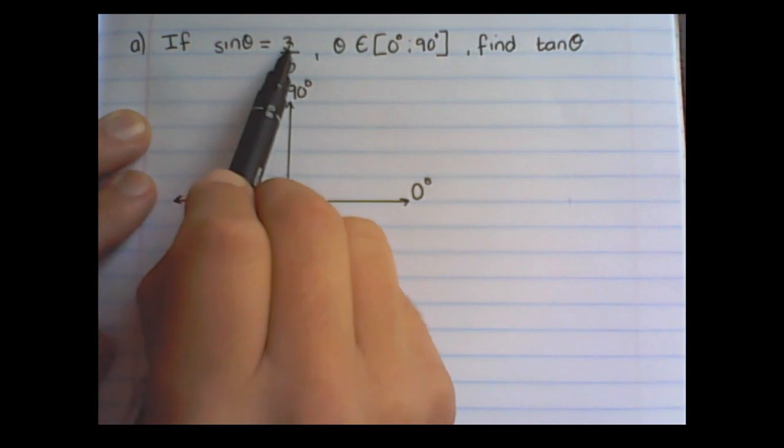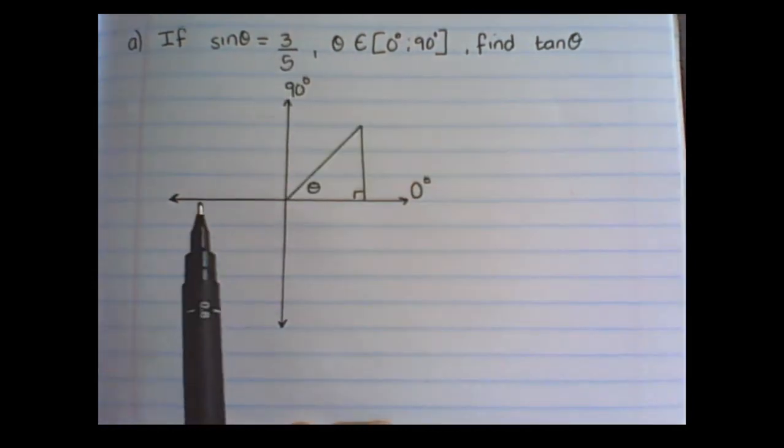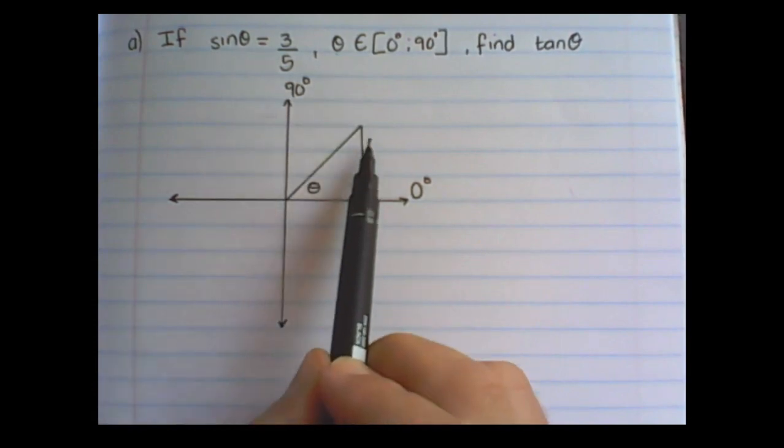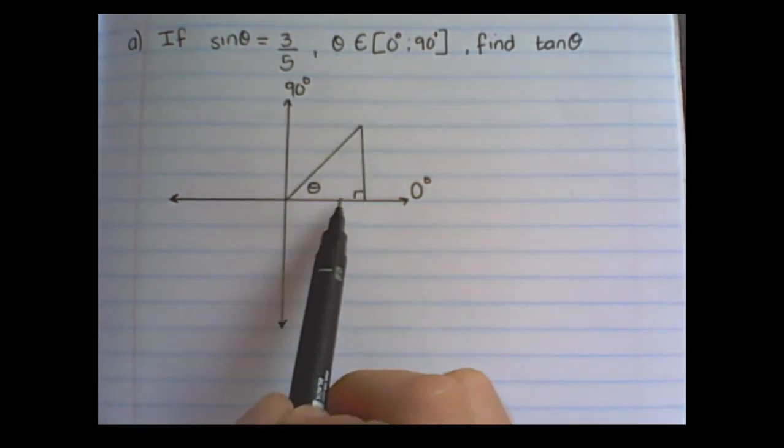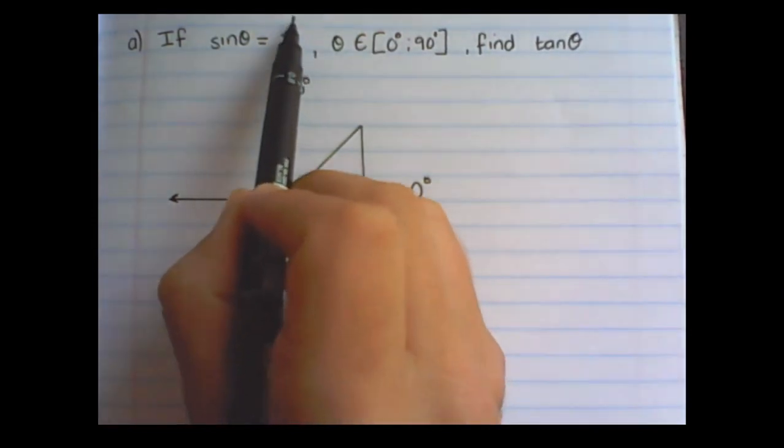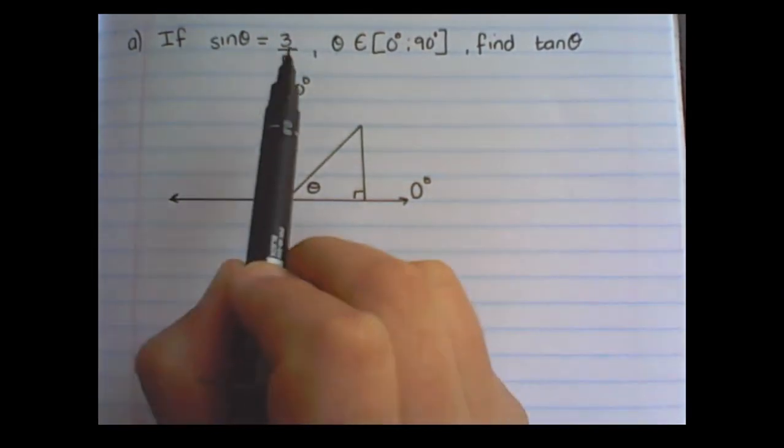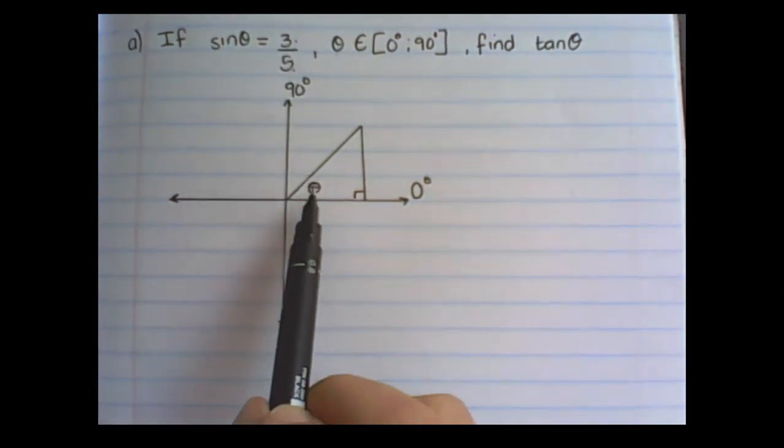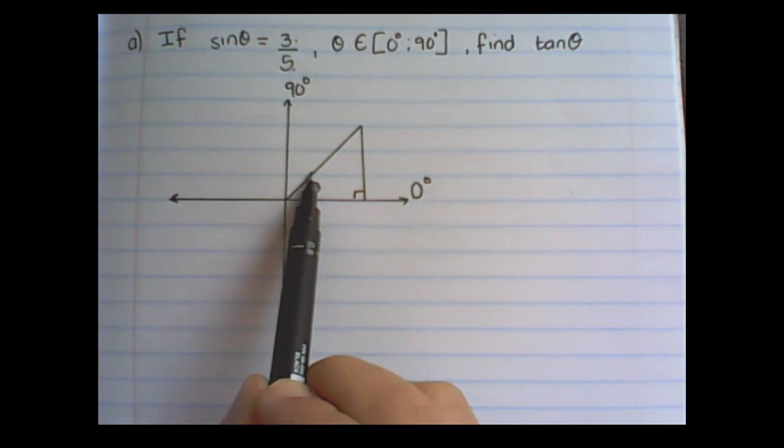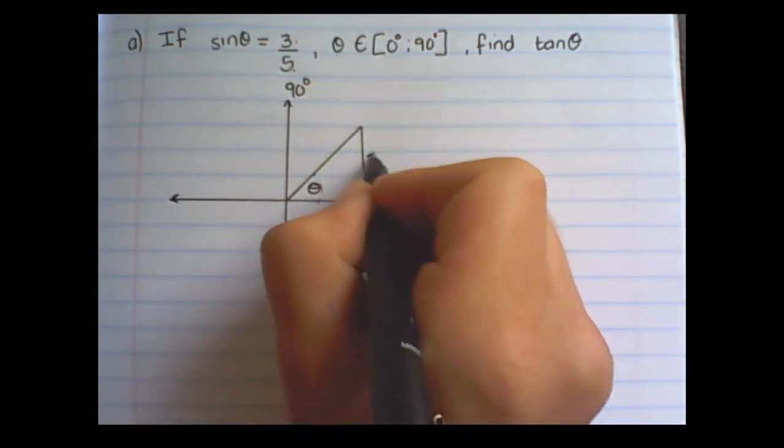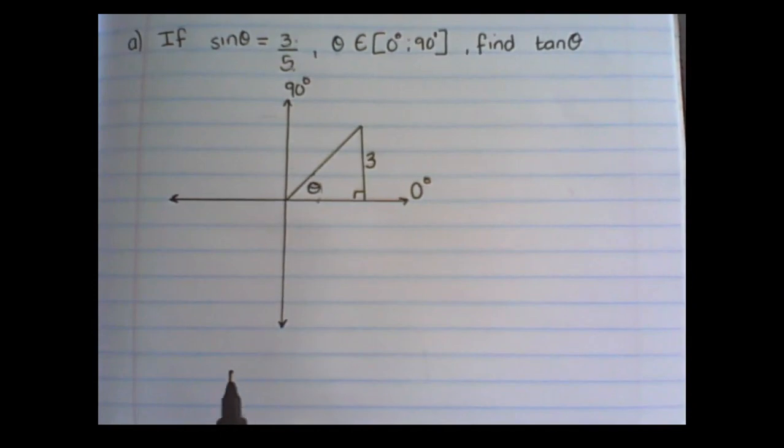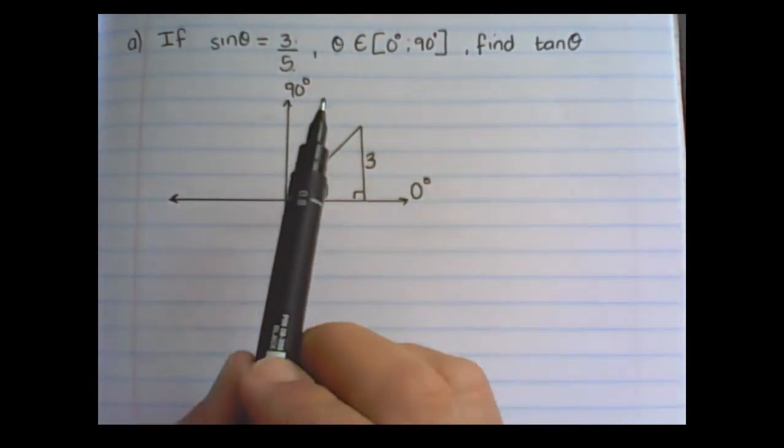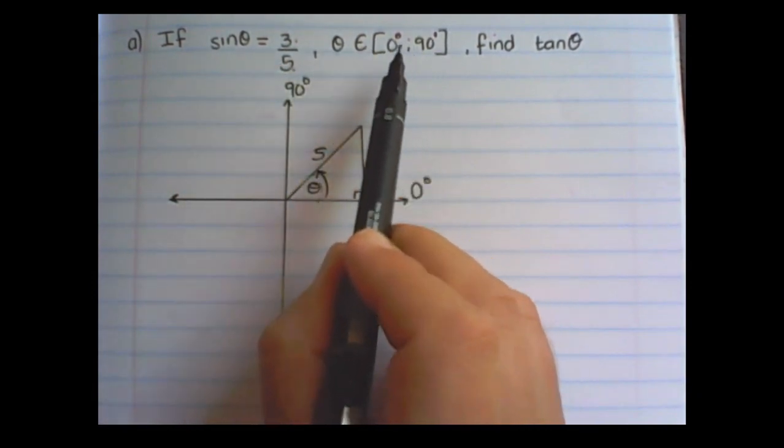And sin is 3 over 5. What I can do is represent θ in the first quadrant in a triangle, and I can fill in values of this triangle using the ratio given to me. So sin is opposite over hypotenuse. So in this triangle from θ the opposite value is 3 and the hypotenuse value is 5. And that is now how I represent this information.